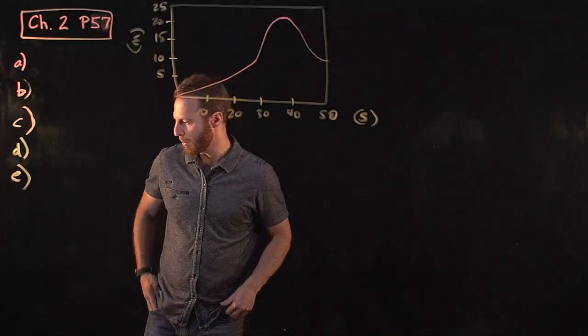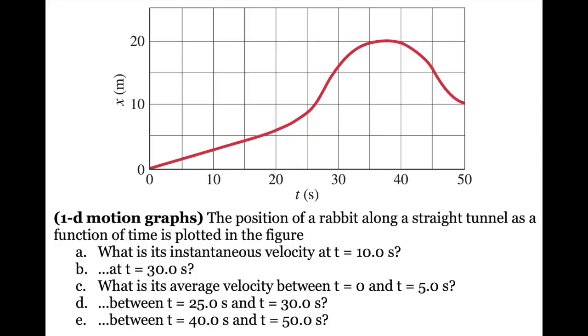This is Chapter 2, Problem 57. We're given a graph that illustrates the position of a rabbit along a straight tunnel as a function of time.